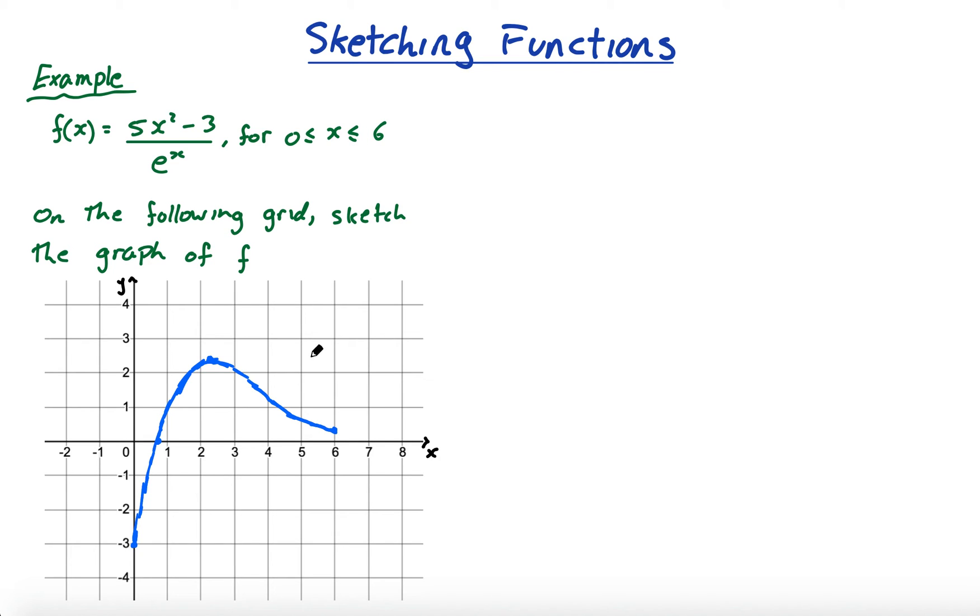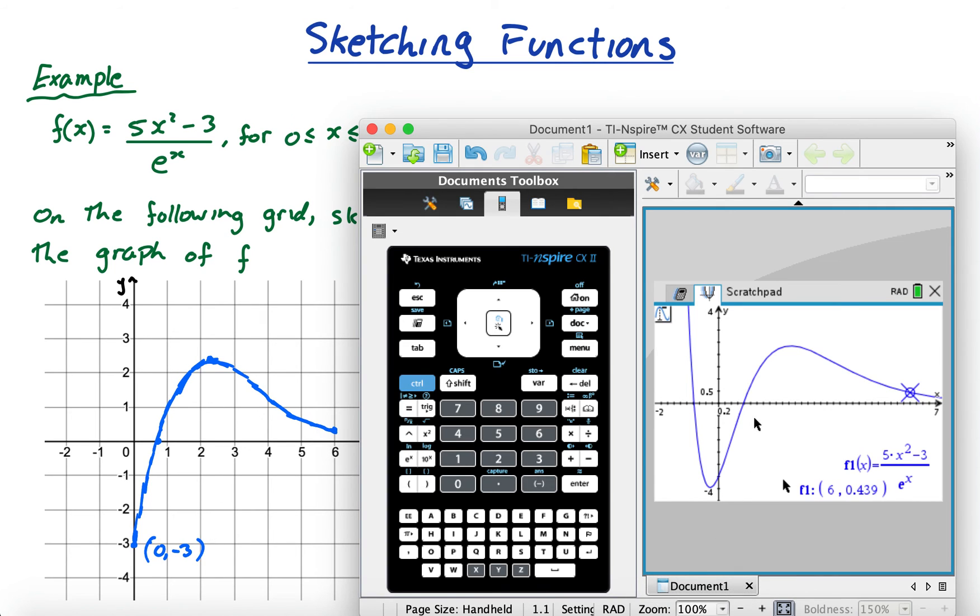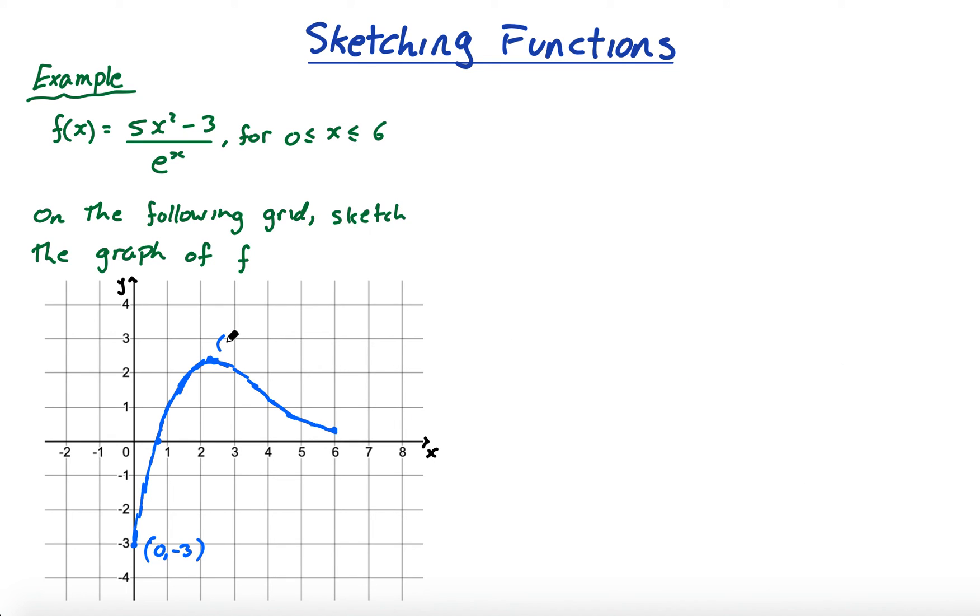Now, it didn't specifically say to put in the points, sometimes it does. I think it's actually nice to put them in anyway. So this is 0, negative 3. This is, well let's actually go back and find out what these points were. This one is 2.3, 2.35.